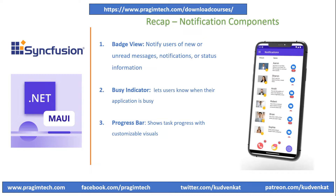Let's quickly review our previous session before we get started. In the previous session, we learned about Notification Controls such as Badge View, Busy Indicator, and Progress Bar Controls. We utilized the Employee List View to display message badges and the Busy Indicator to display the Employee List before loading. We also used the Progress Bar to display the Employee List loading status.